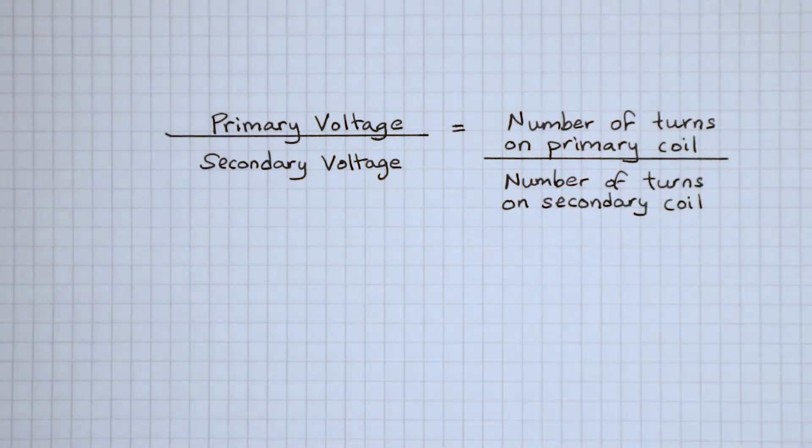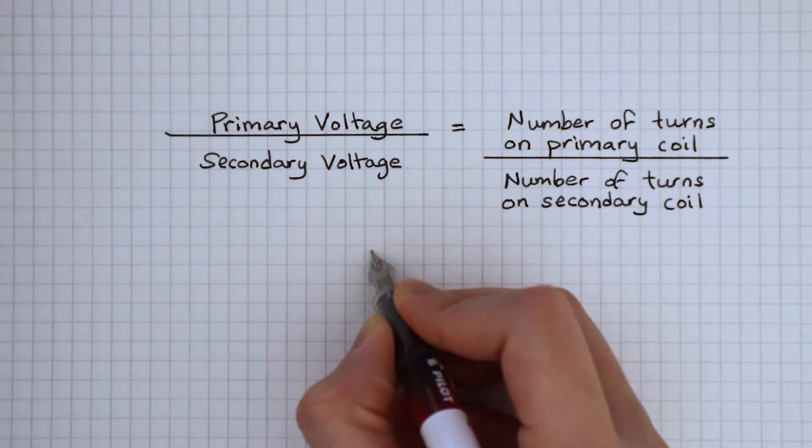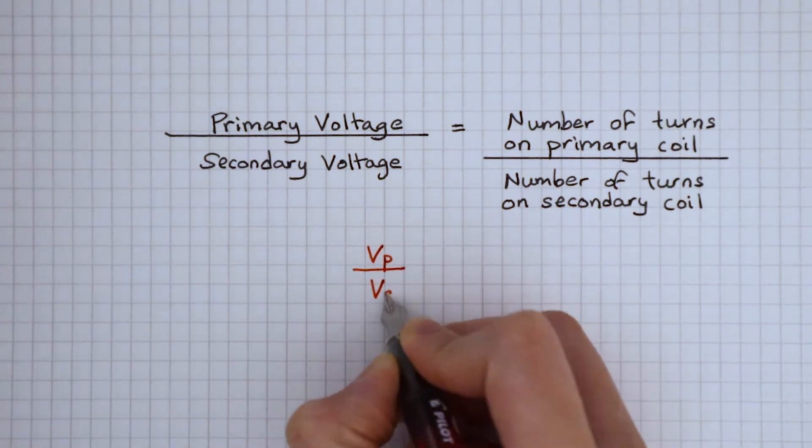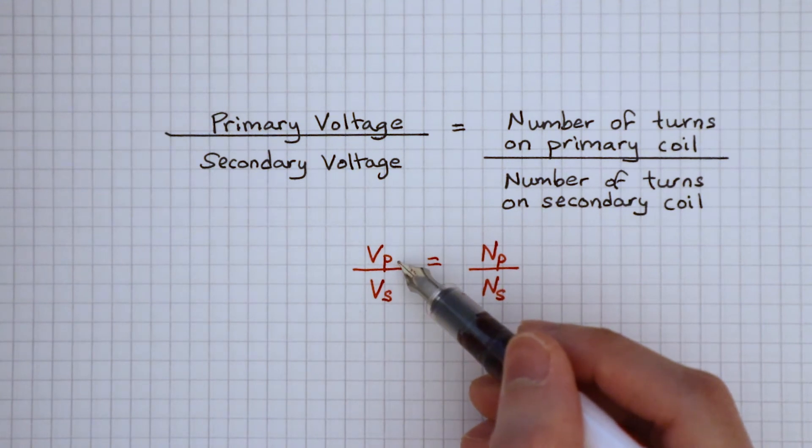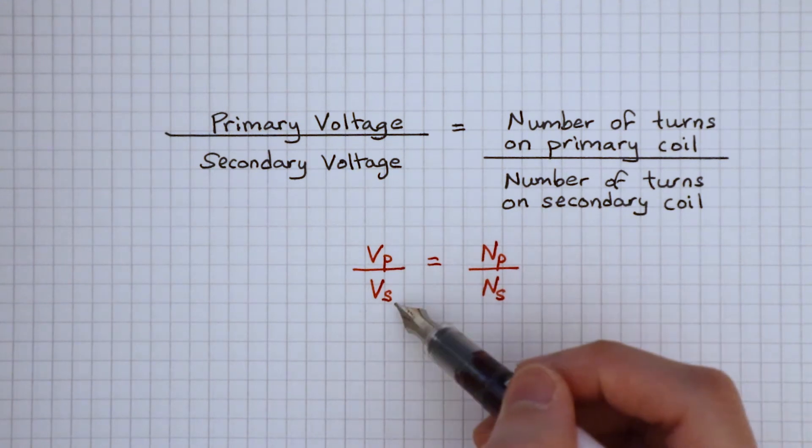We can write this as symbols. VP over VS is NP over NS. The subscript P represents primary, and the subscript S represents secondary.